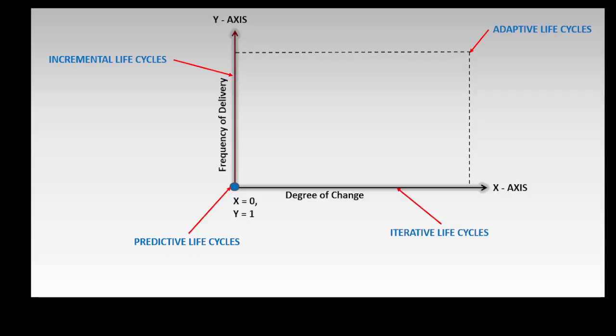The project life cycle category or type that is best suited for a project depends on the characteristics of the project. Some projects may not fall into a single life cycle, as they may have characteristics that fall between the predictive life cycle and adaptive life cycle. Hybrid life cycles combine two or more of the specific life cycle types in the desired pattern.